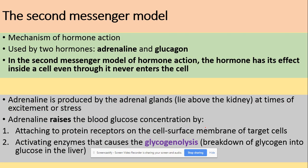In this video we will look at the second messenger model, which is one example of the mechanisms of hormone action. We will be using two hormones: adrenaline and glucagon. In the second messenger model, the hormone has its effect inside a cell even though it never enters the cell. Adrenaline is produced by the adrenal glands, which are located above the kidneys, and it is produced at times of excitement or stress.